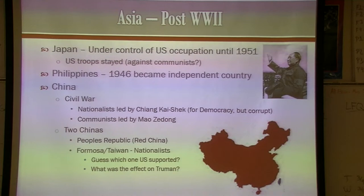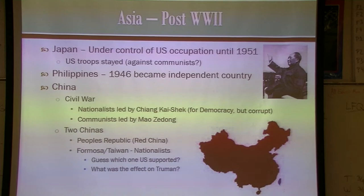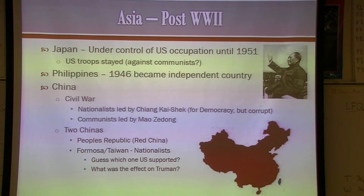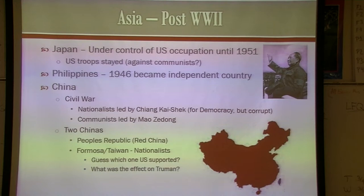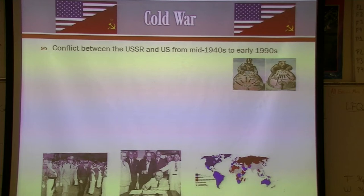Britain and France also supported Taiwan's claim. China's seat in the UN was held by Taiwan, not Communist China — that wouldn't change until the 1970s with Nixon's ping-pong diplomacy. When China fell to Communism, people accused Truman of being soft on Communism, which shaped his philosophy going forward and what became known as containment — we do not want Communism to spread.